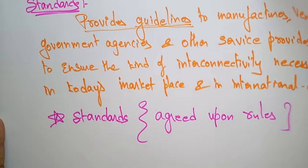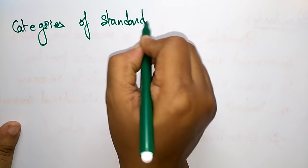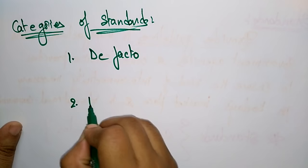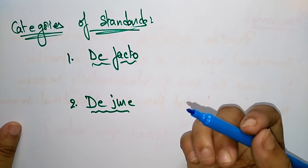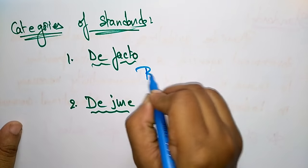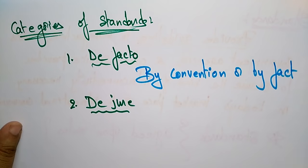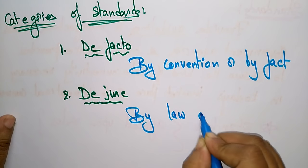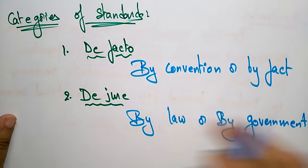There are different categories of standards. One is de facto and another is de jure. De facto means by convention or by fact. De jure means by law or by government. These are the two categories of standards.